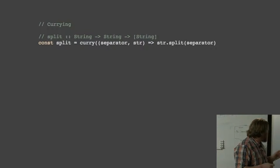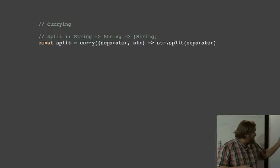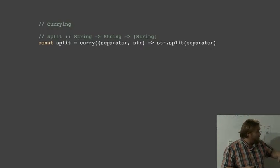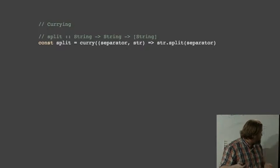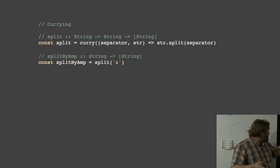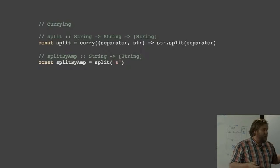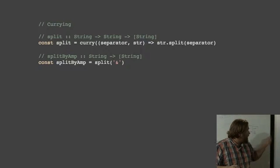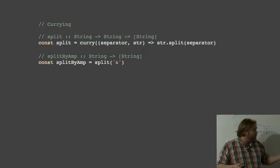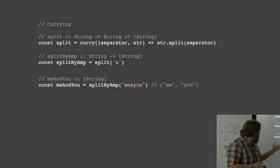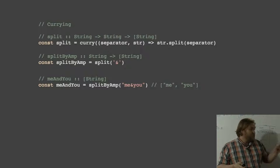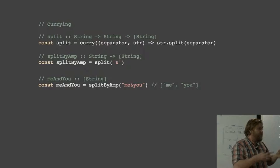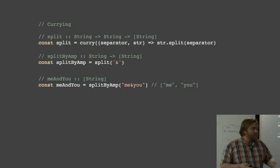As an example, we can take split, which is basically just our string split operation. If we call it with a separator and a string, a two-argument function, and then call that, we can partially apply this function. We get back a function that already has the first argument applied. So this one is just waiting for us to give it a string so it can call the original function. In this case, we get our little me and u variable that's just the list of the strings me and u.